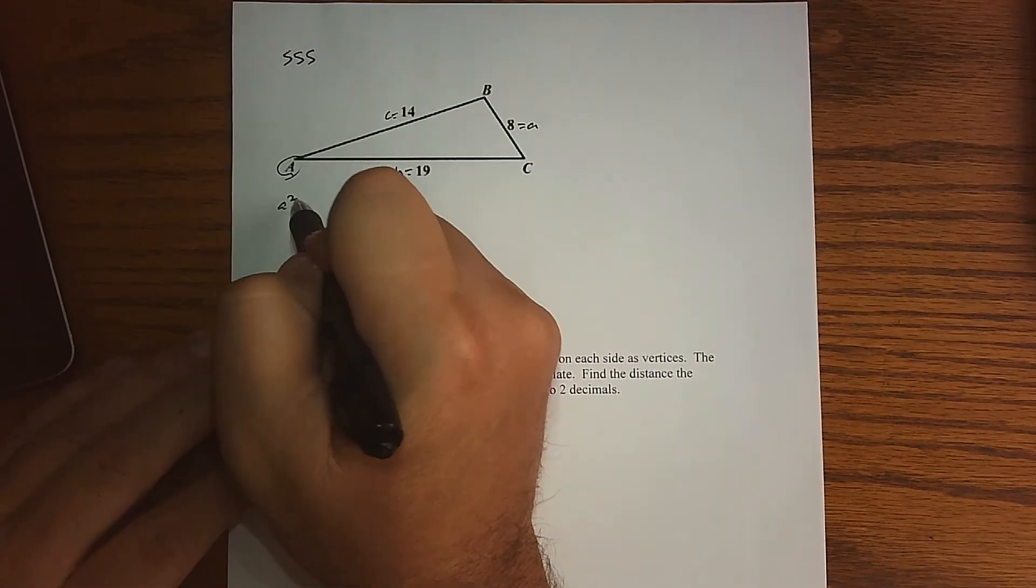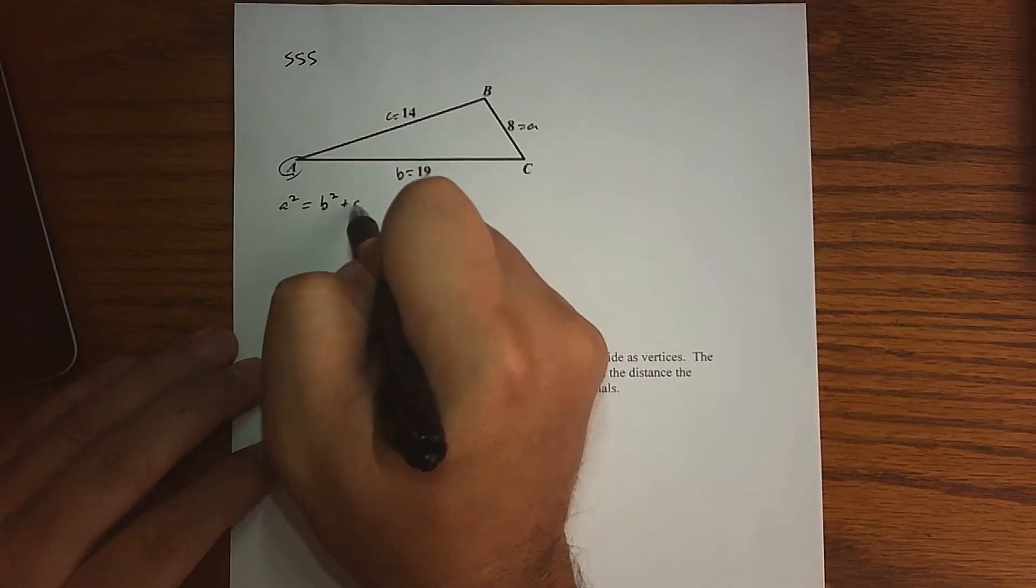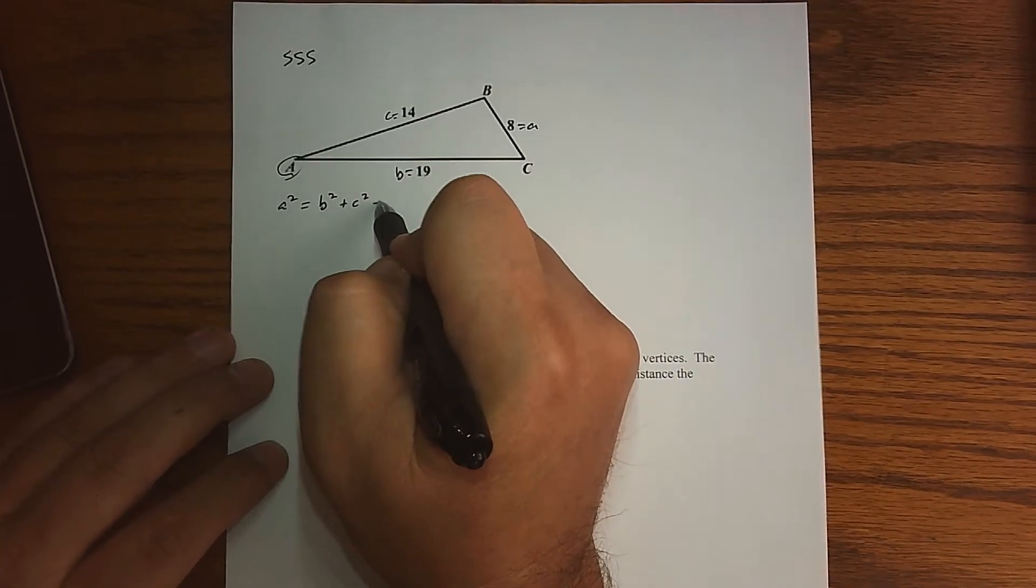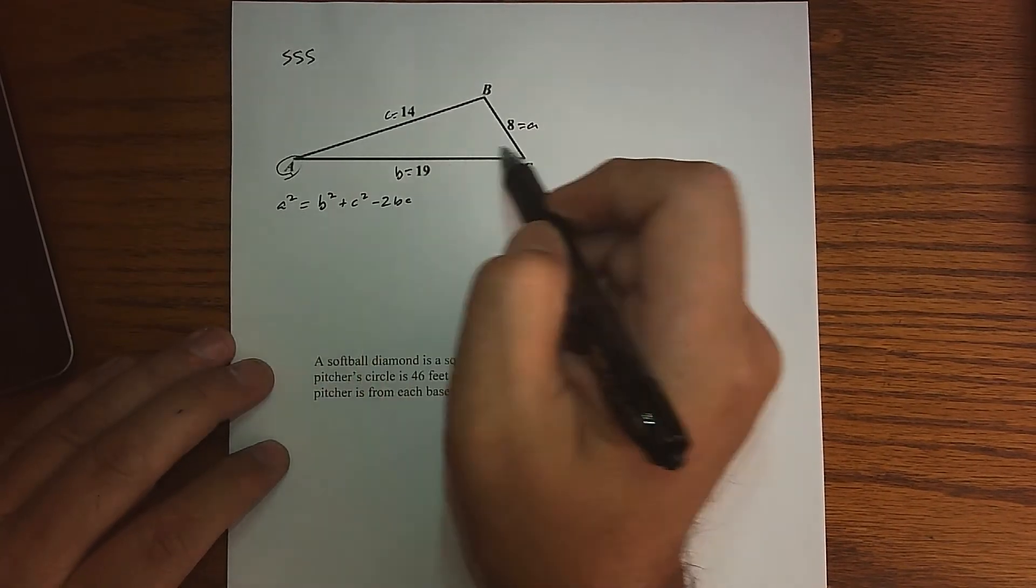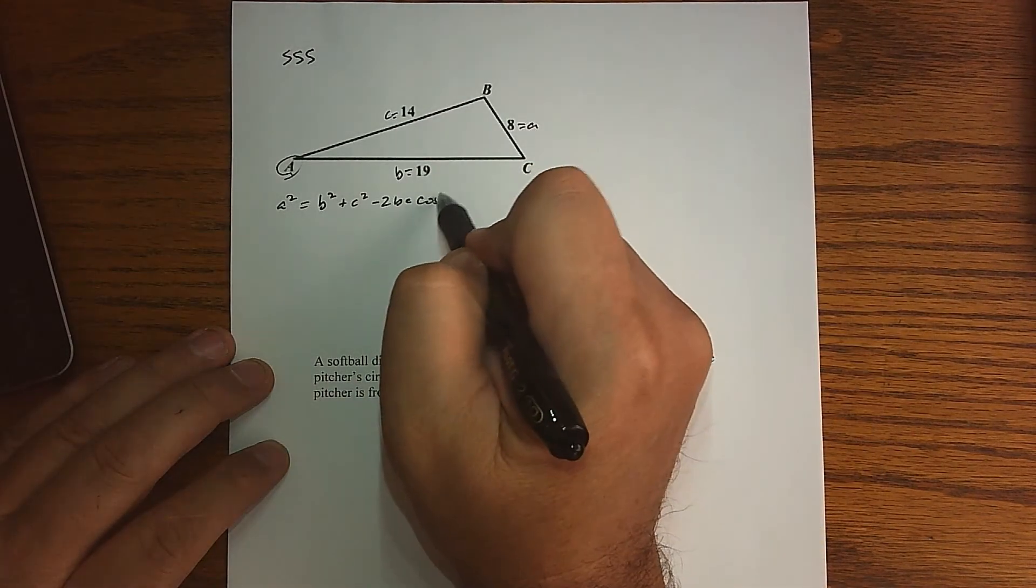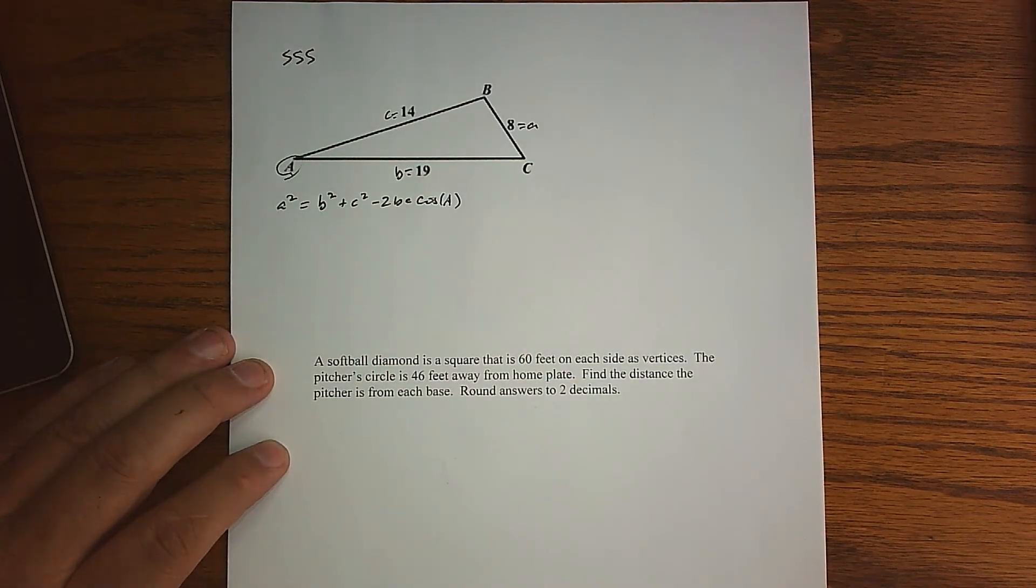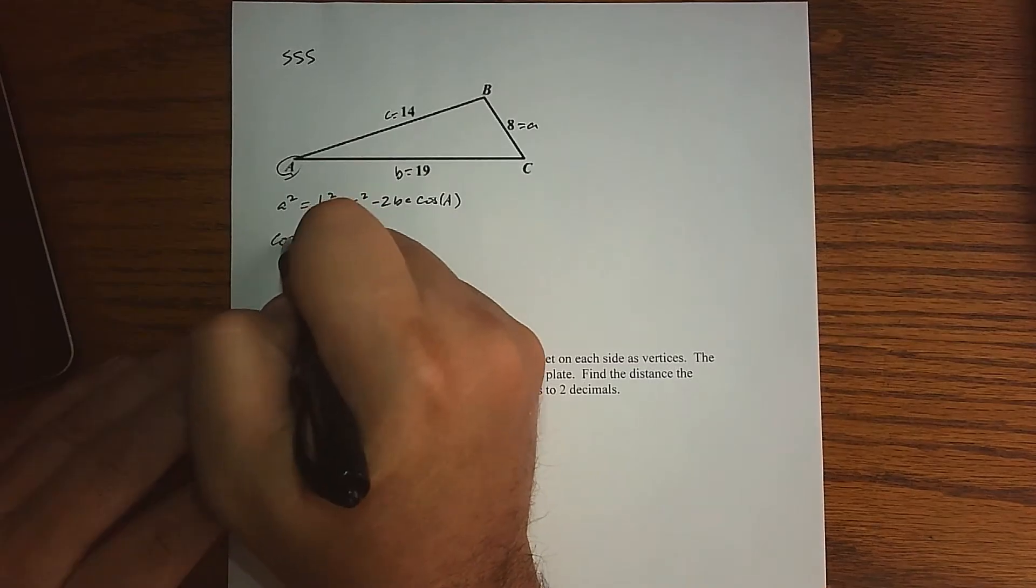We know that side A squared is side B squared plus side C squared minus 2 times those sides times the cosine of A, right? And again, doing the math, I think we've done this a couple of times.